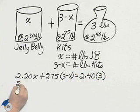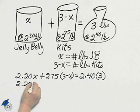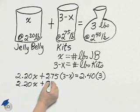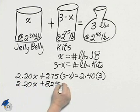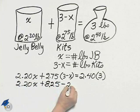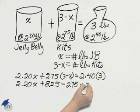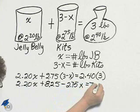$2.20X plus $8.25 minus $2.75X equals $7.20.